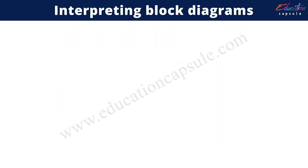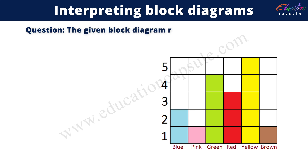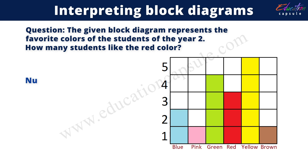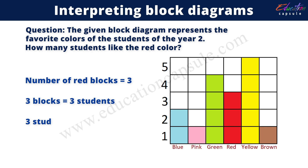Let us try another question. The given block diagram represents the favorite colors of the students of year 2. How many students like red color? The number of red blocks are 3. Therefore, we can say that 3 students like the red color.